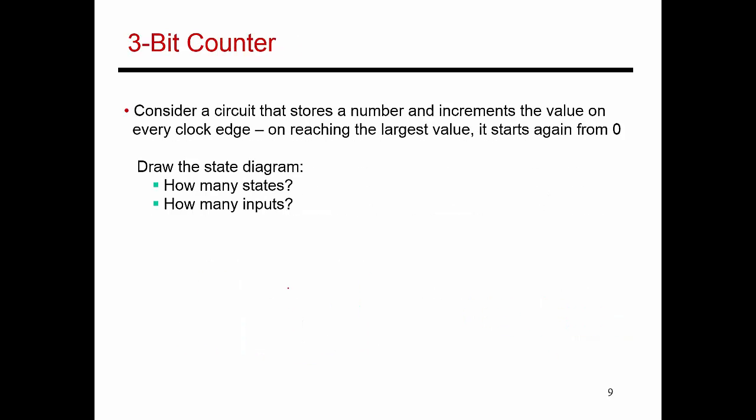Let's extend this to make it a three-bit counter, and change a few other things as well. This is not going to be saturating — if I reach the largest value, it goes back all the way to zero. And this can only increment; it does not have a decrement. So how many states does my circuit have? I can essentially be in state zero, the lowest value, and then with each cycle I increment my counter, moving to state one, two, three, and so on all the way up to seven, then loop back to zero.